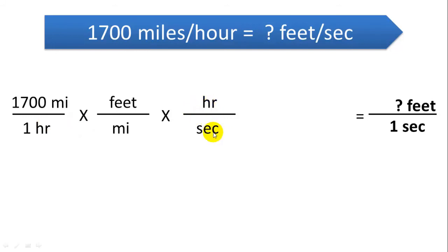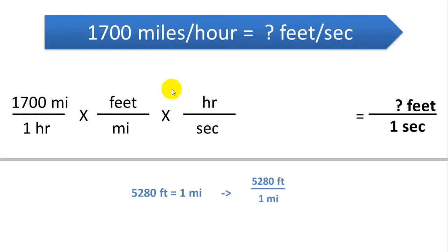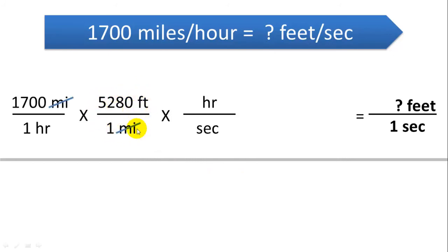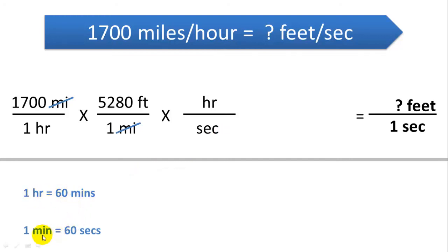We look up the conversion rate for hours to seconds — both are units of time. First, feet per mile: there are 5,280 feet per one mile. We format this as feet on top and miles on the bottom — 5,280 feet over one mile — and plug it in. The miles cancel each other out. Next we need to convert the time units: we're given hours and need to convert to seconds, so we put hours on top and seconds on the bottom.